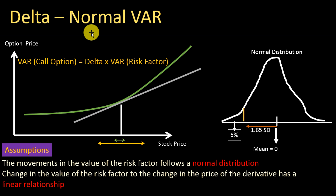Most financial institutions use the historical simulation or the Monte Carlo simulation approach to calculate value at risk. Some corporates and smaller or tier 3 banks do use delta normal value at risk based on their risk profile. For a financial institution with a huge amount of risk, using the delta normal approach will not give an accurate or true picture of the VAR. Going through the assumptions will help you understand why this approach might not be best for very large financial institutions.